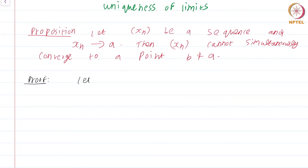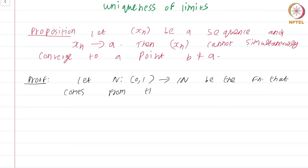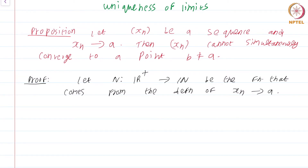Proof. Let N from R+ to the natural numbers be the function that comes from the definition of x_n converging to A. Instead of taking it from (0,1), let me take it from R+ to N. Recall that it does not really matter — if I had a function from (0,1) to N that satisfies the definition of convergence, you get a function from R+ to N as well.